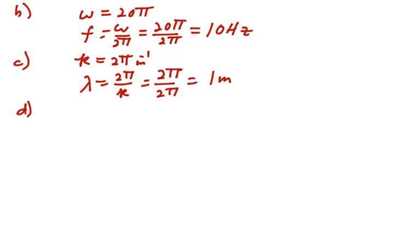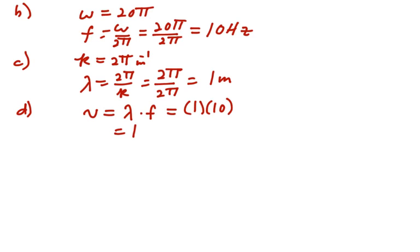To get the speed of propagation, that is the wavelength times the frequency, so that is 1 meter times 10 hertz, or 10 meters per second.